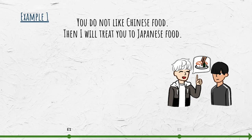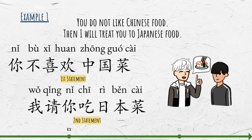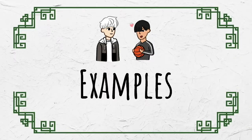The first statement: 你不喜欢中国菜. The second statement: 我请你吃日本菜. To connect the two statements: 你不喜欢中国菜，那我请你吃日本菜. Here are some more examples.